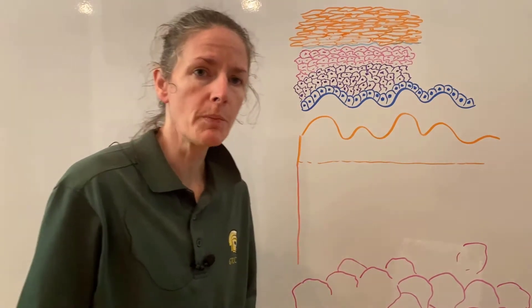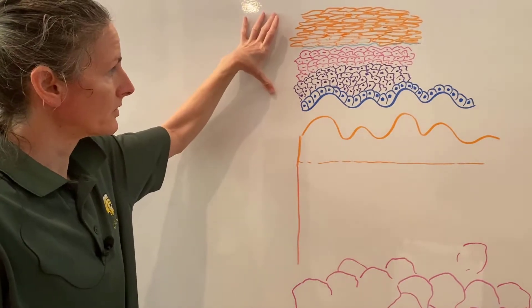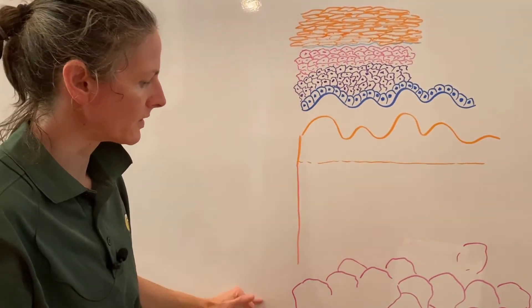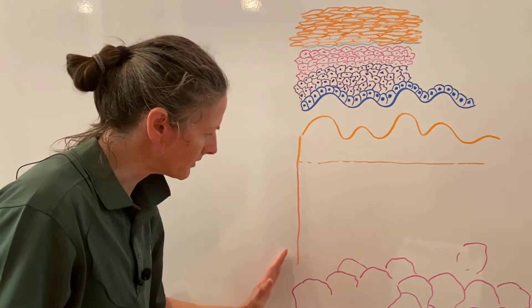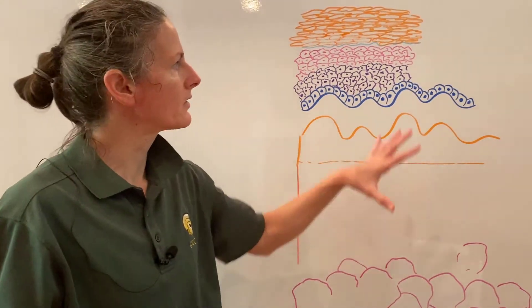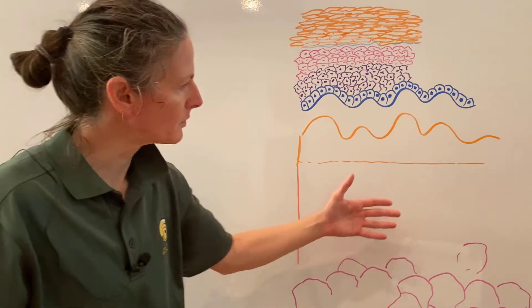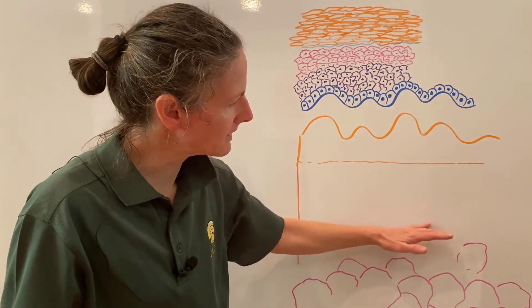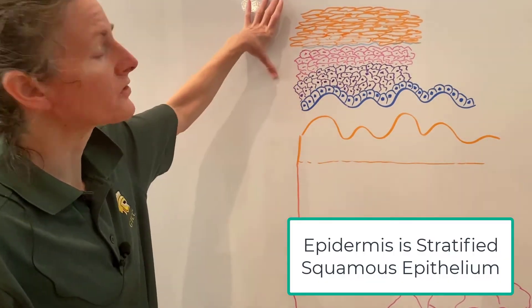The cutaneous membrane is composed of two parts: an epidermis and a dermis. 'Epi' means upon, so the epidermis is upon the dermis. The dermis is the underlying connective tissue layer, while the epidermis is an epithelium — specifically a stratified squamous epithelium.